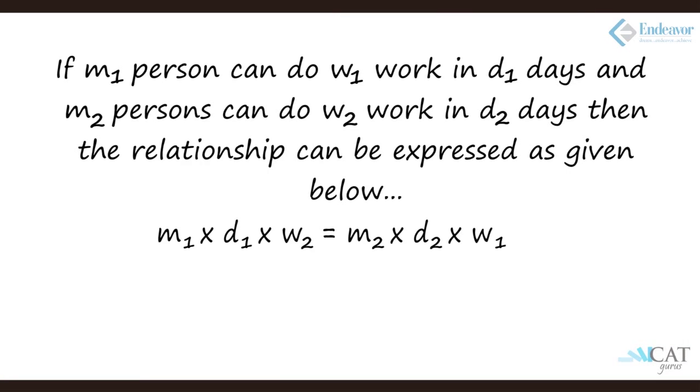Now let's say if m1 person can do w1 work in d1 days and m2 person can do w2 work in d2 days, then the relationship can be expressed as m1 into d1 into w2 is equal to m2 into d2 into w1. In other words, m1 into d1 divided by w1 should be equal to m2 into d2 divided by w2. Let's see how we apply it.